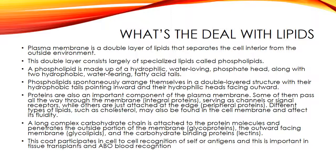The cytoplasm also contains microtubules, microfilaments, intermediate filaments, and thick filaments. The microtubules help determine cell shape, help the organelles move around in the cytoplasm, and help the cilia and chromosomes during cell division. The actin myofilaments and the myosin thin filaments interact so that muscle cells can actually contract.